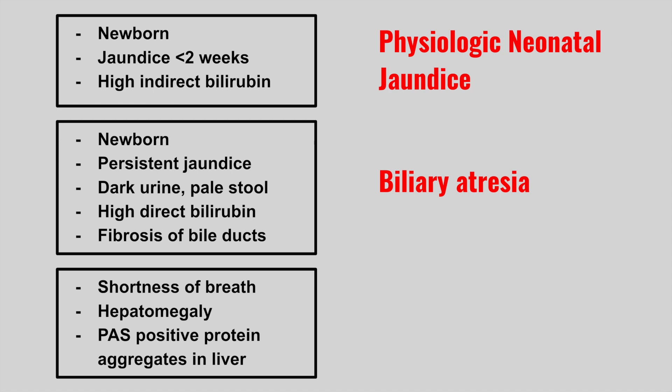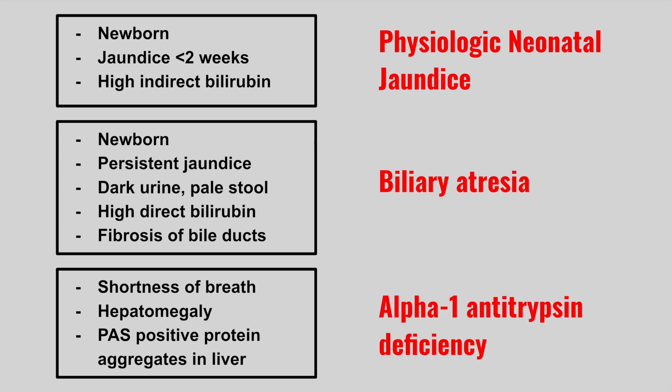The next patient has shortness of breath, hepatomegaly, and PAS-positive protein aggregates in the liver. This is alpha-1 antitrypsin deficiency. This one is really high yield — look out for both lung and liver symptoms. Shortness of breath comes from the lung issues, and hepatomegaly is due to the protein aggregates in the liver.